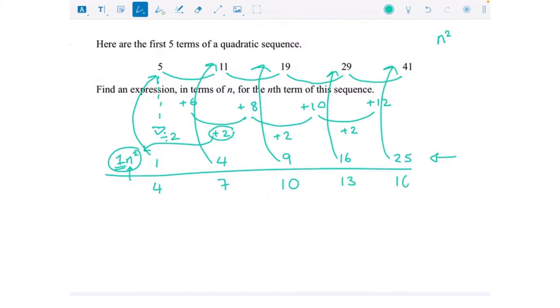From 25 to 41 we need another 16. So now what is the nth term of this? This is going up in threes, it's the three times table but an extra one bigger, so this is 3n add 1. My nth term for this sequence is n squared add 3n add 1, and together that makes the nth term of the sequence at the top.